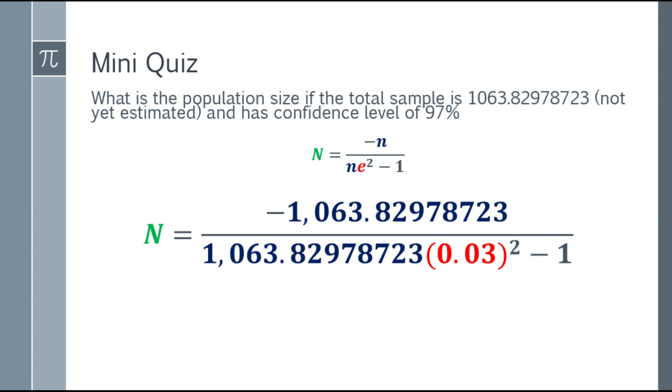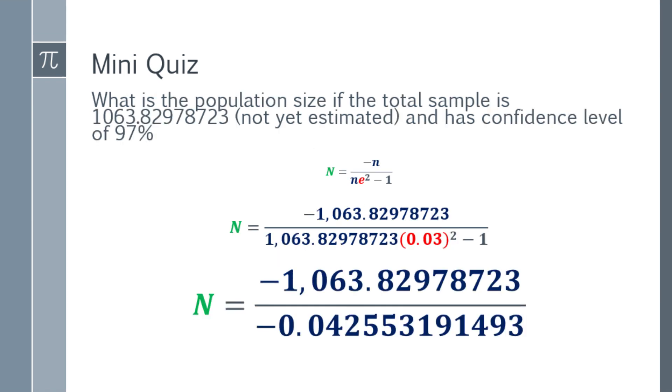In the numerator, that will be negative 1,063.829 and so on. Negative, remember. In the denominator, that will be 1,063.82 and so on. Then multiply it by the square of the margin of error, which is 3%, that will be 0.03. In your calculator, 0.03 squared, multiply by 1,063.82 and so on. Your answer, minus 1, and you will arrive at negative 0.04255 and so on. Check the screen.